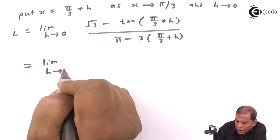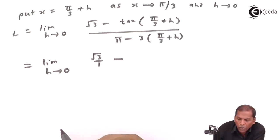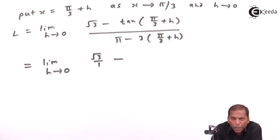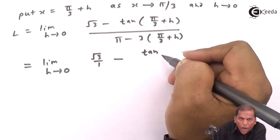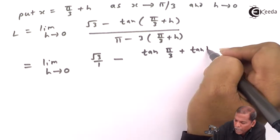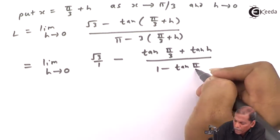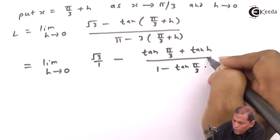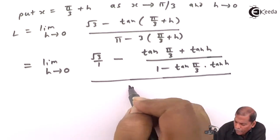That equals limit as h tends to 0 of √3 upon (1 minus tan(π/3 + h)). We apply the tan(a + b) formula, which gives tan a + tan b / (1 − tan a · tan b). So tan(π/3 + h) = (tan(π/3) + tan h) / (1 − tan(π/3)·tan h), all divided by (π − 3·(π/3 + h)).